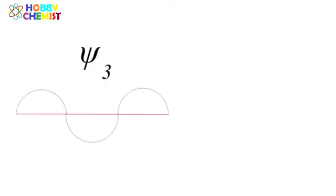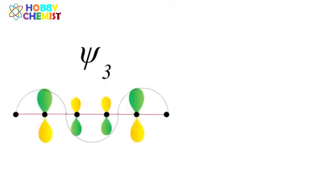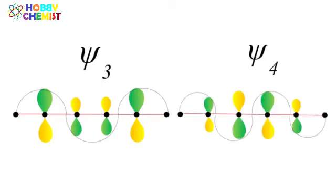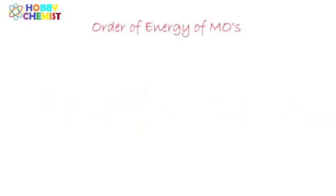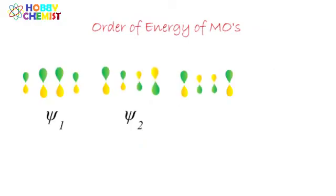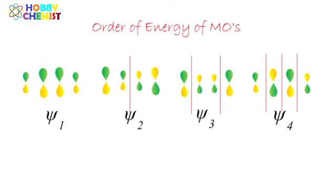Similar treatment gives the third molecular orbital with two nodes and fourth molecular orbital with three nodes. Energy of MOs are proportional to the number of nodes. Psi-4 having three nodes has the highest energy and Psi-1 with zero node has the lowest energy.